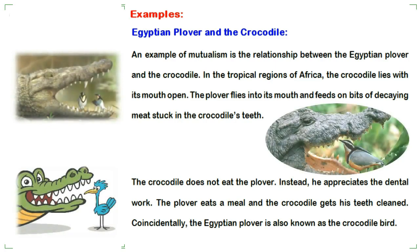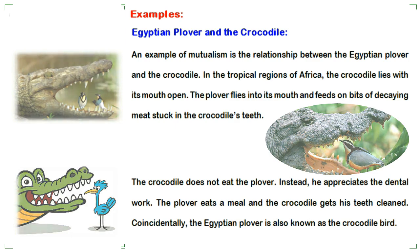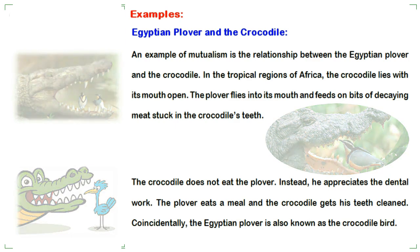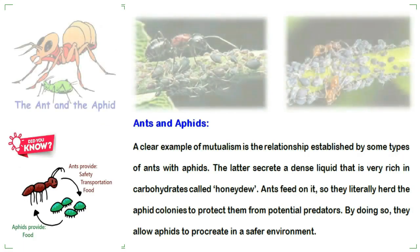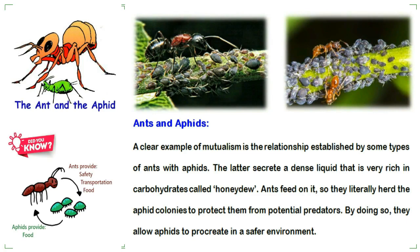An example of mutualism is the relationship between the Egyptian plover and the crocodile in the tropical regions of Africa. The crocodile lies with its mouth open; the plover flies into its mouth and feeds on bits of decaying meat stuck in the crocodile's teeth. The crocodile does not eat the plover — instead it appreciates the dental work. The plover eats a meal and the crocodile gets its teeth cleaned. Coincidentally, the Egyptian plover is also known as the crocodile bird.